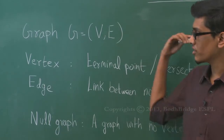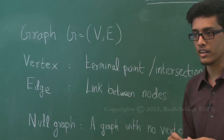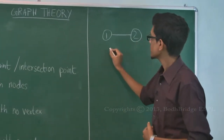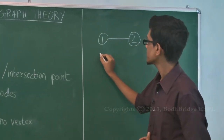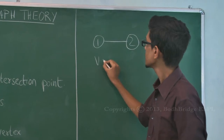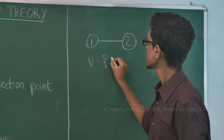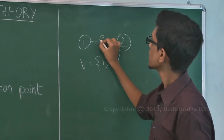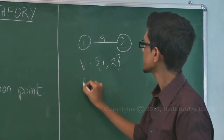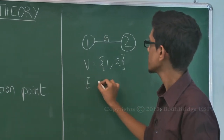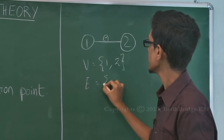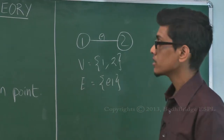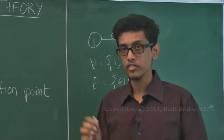We'll just see a few examples of graphs now. Here is an example where the set of vertices V is {1, 2} and the set of edges E is {e1}. So this is a graph.